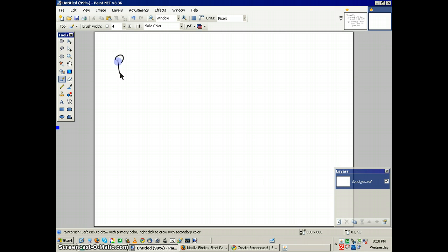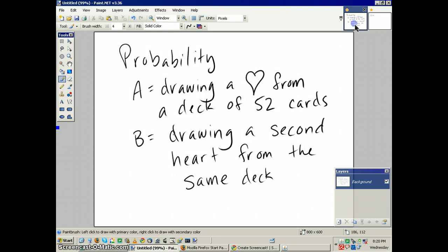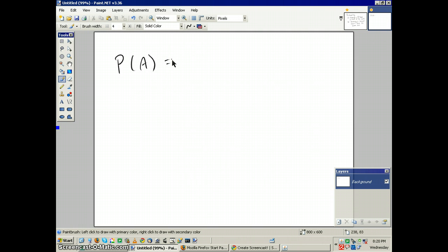The probability of A - remember A is the probability of drawing a heart from a deck of 52 cards - equals 13 over 52 because there are 13 cards in a suit. There are 52 total cards in the deck. So if we break that down, 13 goes into 52 one-fourth or one-quarter time. The chance of drawing a heart on the first draw is 1 in 4.